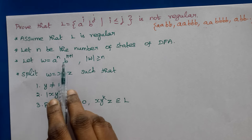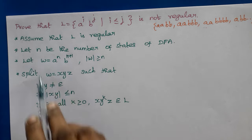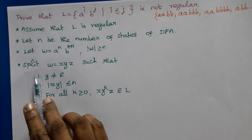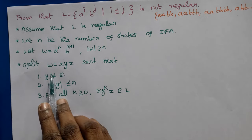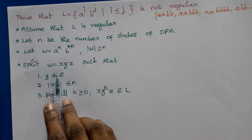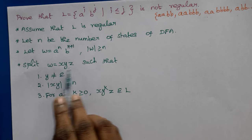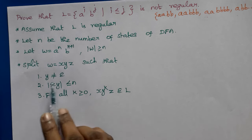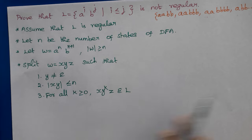So W = a^N b^(N+1) is a valid input string chosen from language L, with length at least N. Then we split W into three parts X, Y, Z with the standard Pumping Lemma conditions.